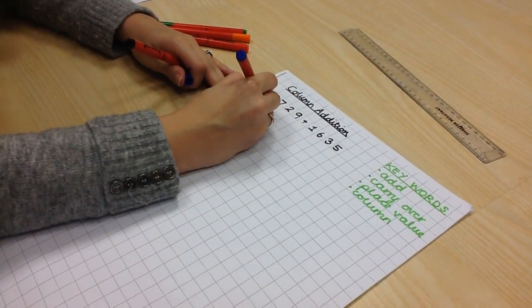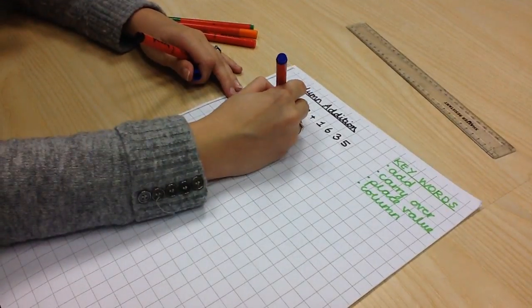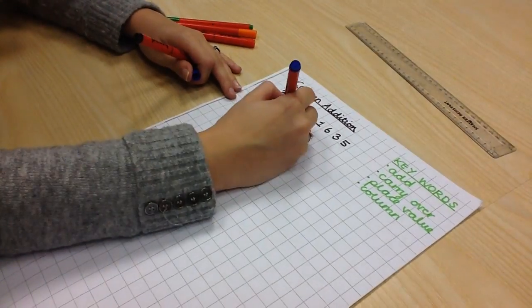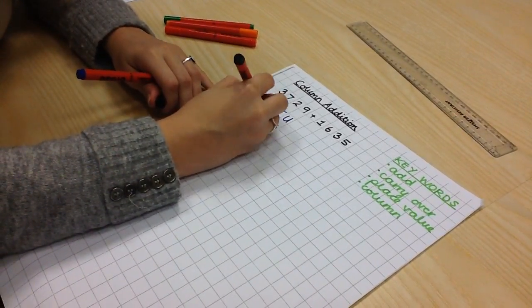These are thousands, hundreds, tens and units. Once these are correctly laid out, you can move on to step 2.